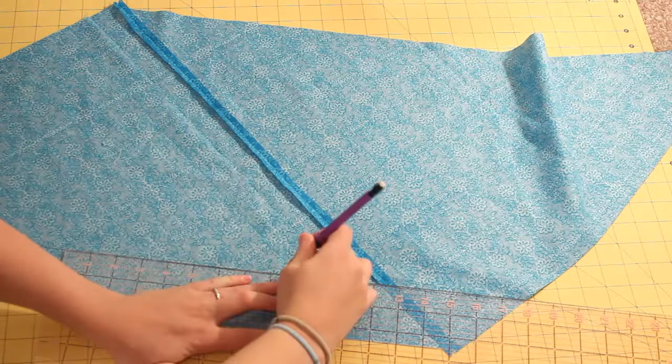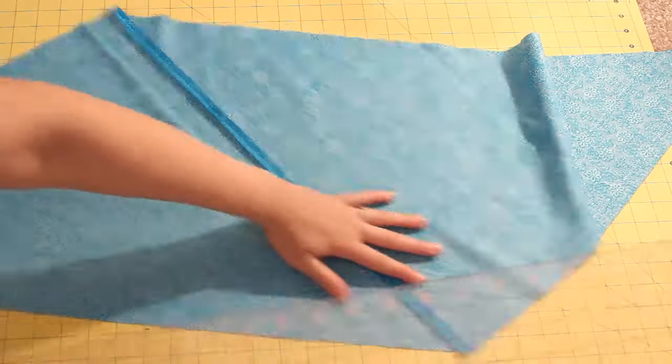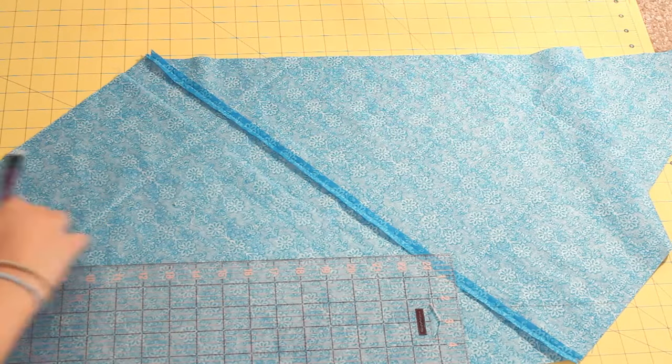On the back side of the fabric begin marking lines as wide as you want your bias strips to be. The lines should all be parallel with the longer sides of the shape with the seam going across at an angle.